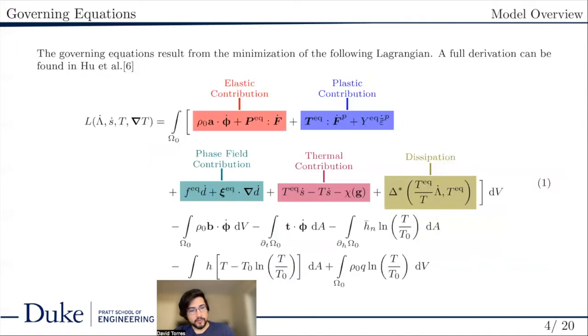Our variational formulation stems from the following Lagrangian. Here, we include the effects of elastic contributions, plastic contributions, phase field contributions, thermal contributions, and then energy dissipations.